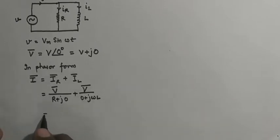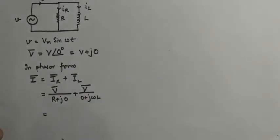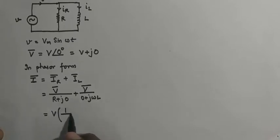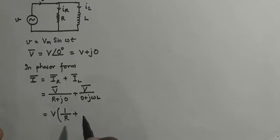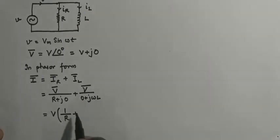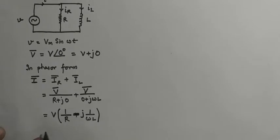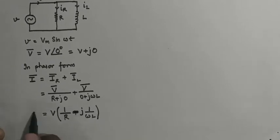Further, the phasor V equals its magnitude V (only the real part). Taking V common, we get V times the quantity (1/R + 1/(jωL)). Multiplying numerator and denominator by j, we get the current phasor as V times (1/R − j·1/(ωL)).